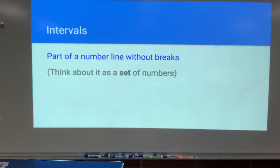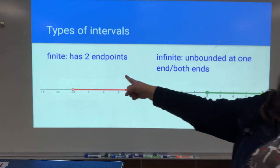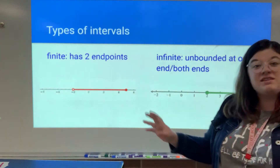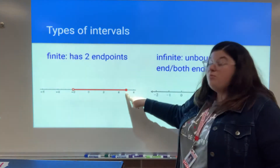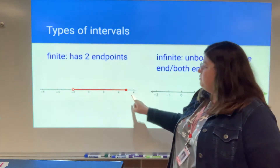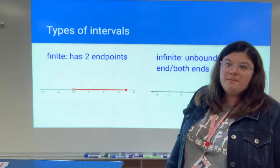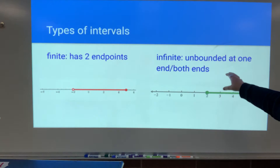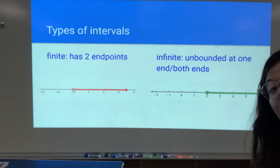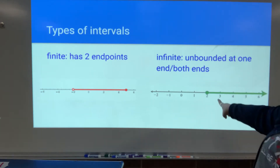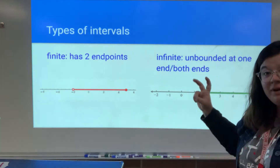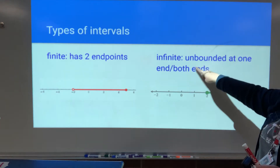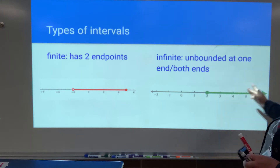Now we're going to talk about different types of intervals. You could have a finite interval and you could have an infinite interval. In a finite interval, you have two endpoints — all your numbers are contained between, say, negative 2 and 5. Finite means you're putting a stop to the interval with two endpoints. On the other hand, infinite intervals are unbounded at one or both ends. Notice here we only have one endpoint at 2, and this section of the number line continues forever in one direction — so it's bounded at one end, and the other side has no end.